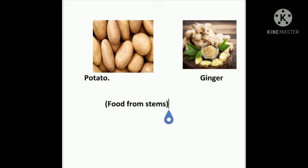The next one is potato and ginger. These foods we get from which part of the plant? Stem. We get potato and ginger from the stem, which is a part of the plant.